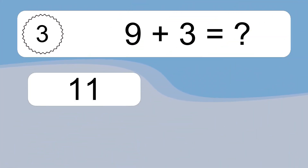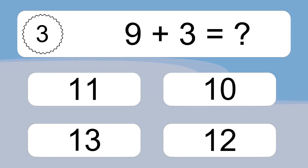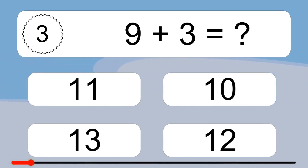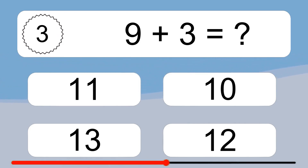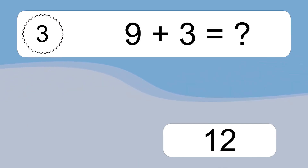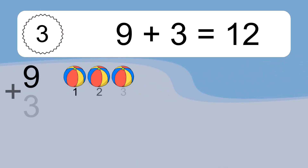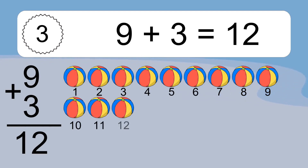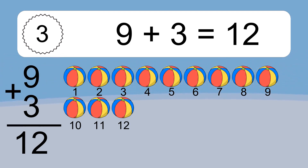9 plus 3 equals what? 9 plus 3 equals 12. Let's count it: 1, 2, 3, 4, 5, 6, 7, 8, 9, 10, 11, 12.